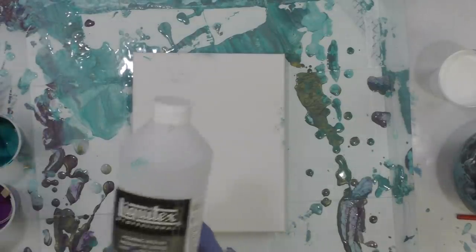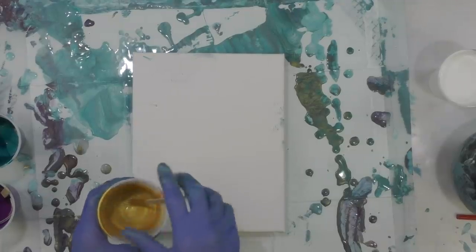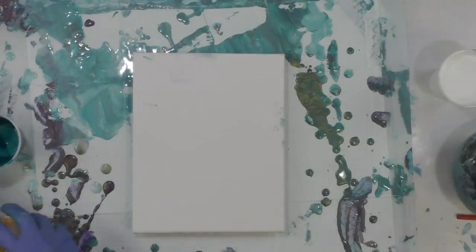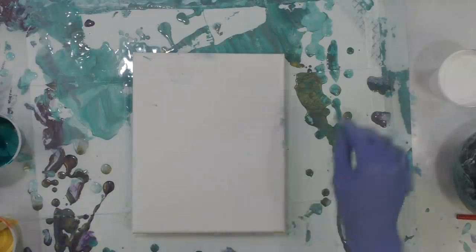And to all of these colors I added Liquitex Pouring Medium and Water. So you mix your pouring medium in first and then you add your water at the end. And I do not have silicone in it and I'm not going to use silicone either.